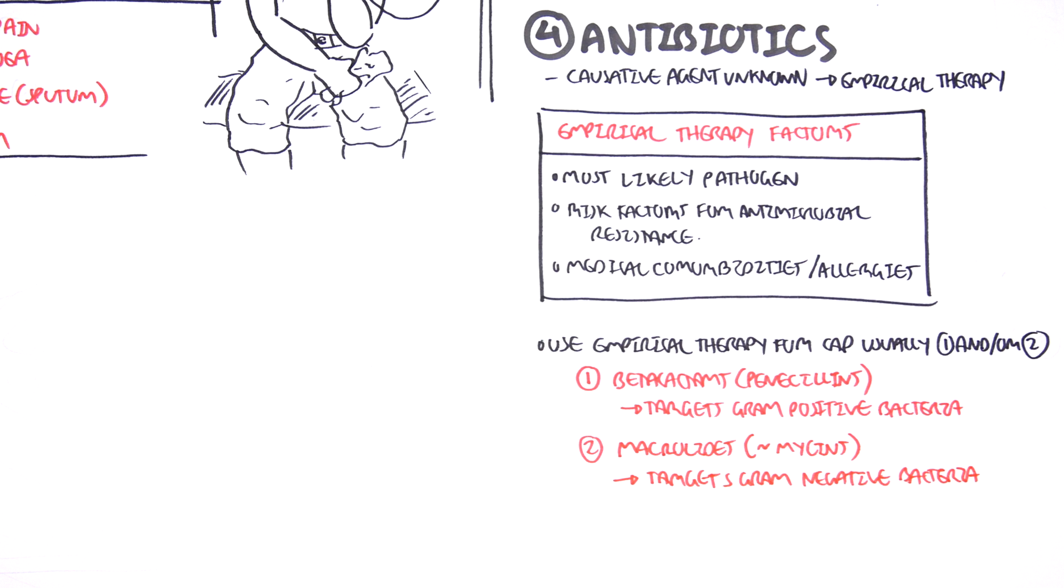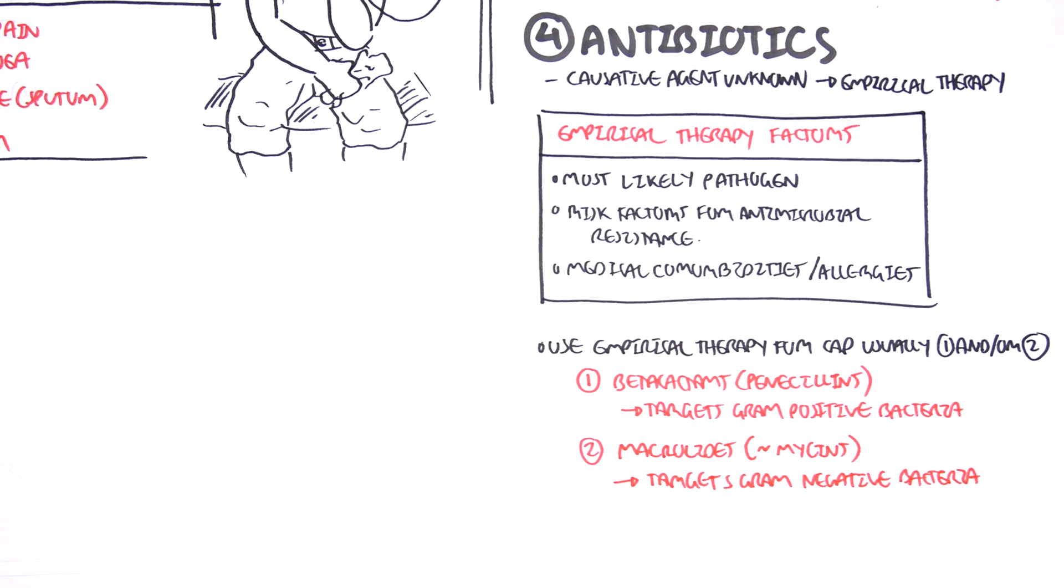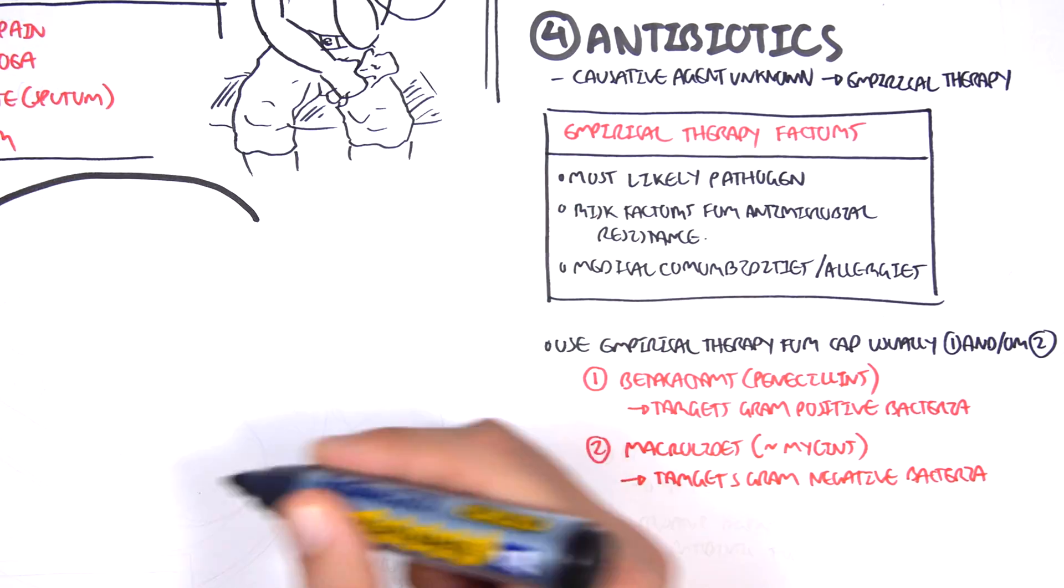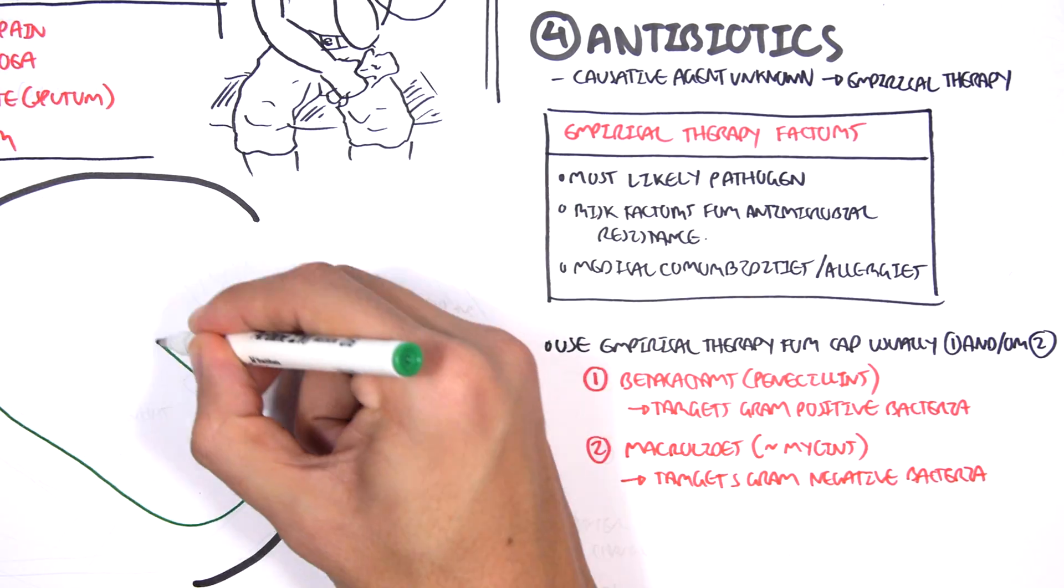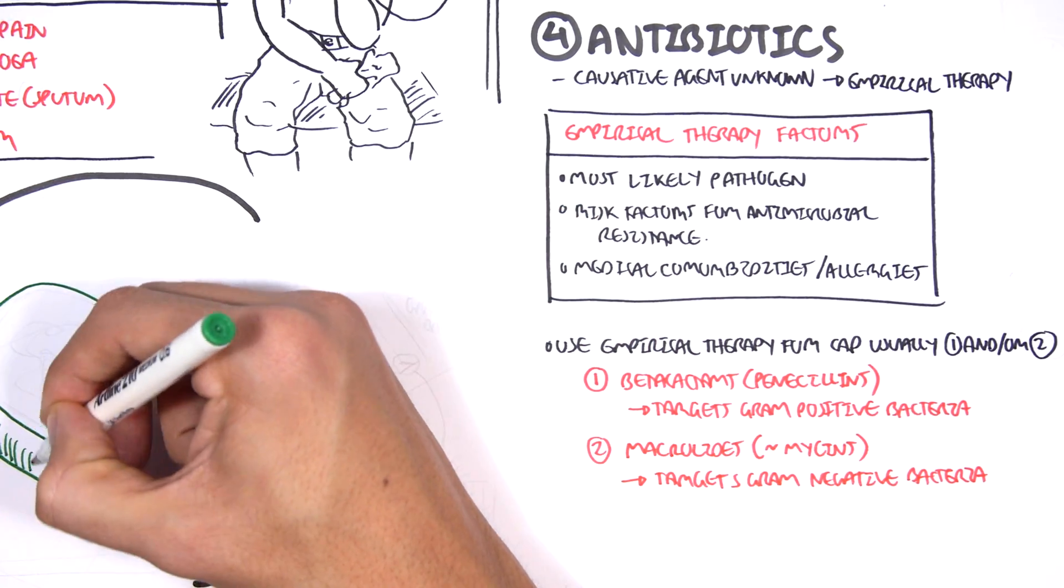Of course, it might not be a bacteria, it might be a virus, and so you have to perform further investigations until you find the causative agent. But the empirical therapy is important so that it can cover the main culprits, the bacteria, if they are the cause.